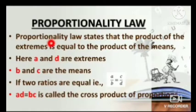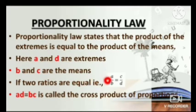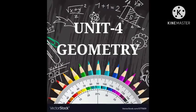Proportionality law states that the product of the extremes is equal to the product of the means. Here A and D are extremes, B and C are the means. If two ratios are equal, A by B equals C by D, then AD equals BC — this is called the cross product of proportion. Next, Unit 4 - Geometry.